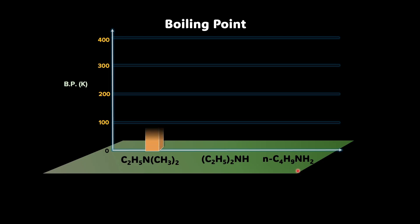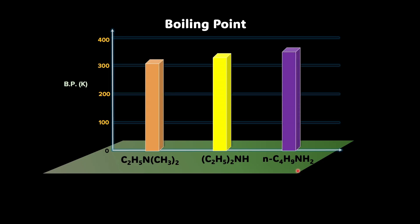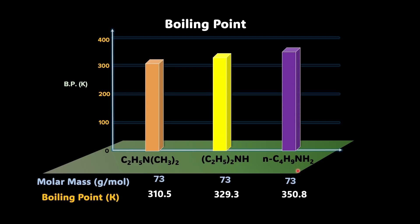Look at the boiling point. Even though the molar mass of all three of them are the same, it is the primary amine which has the highest boiling point of 350.8 Kelvin. The secondary amine has a boiling point of 329.3 Kelvin, and the tertiary amine has a boiling point of 310.5 Kelvin.